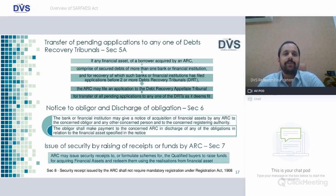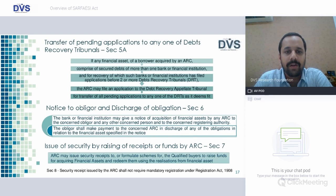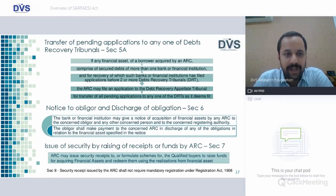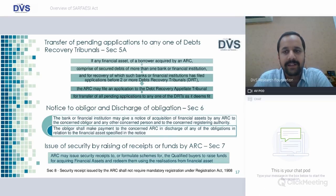Section 5 also speaks about the transfer of pending applications. If any financial asset of a borrower acquired by ARC comprises secured debts of more than one banking or financial institution, and for acquiring of which the bank or financial institution has filed applications before two or more DRTs, at the discretion of ARC it can select all the pending applications to any one of the DRTs as it deems fit.